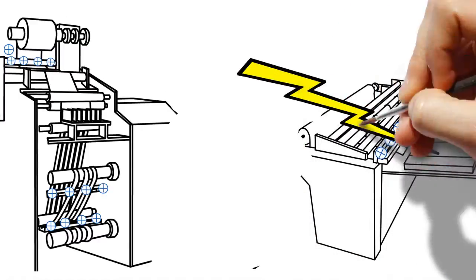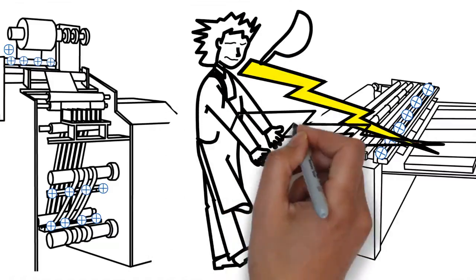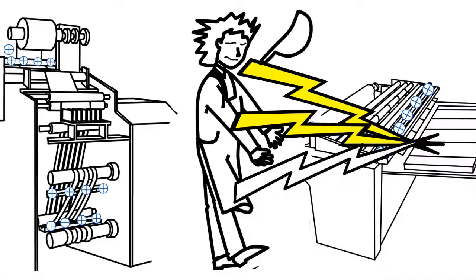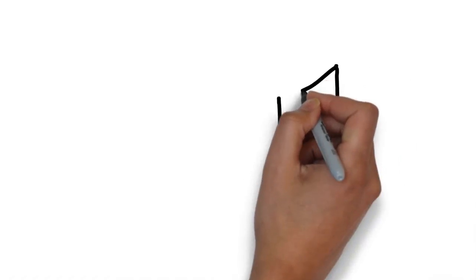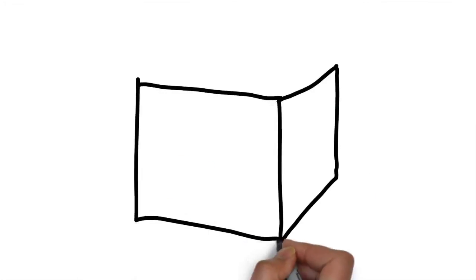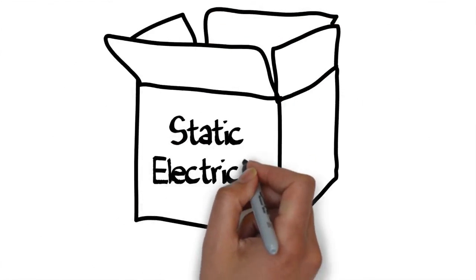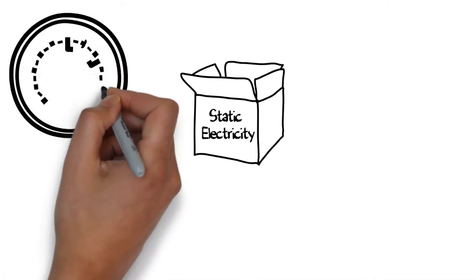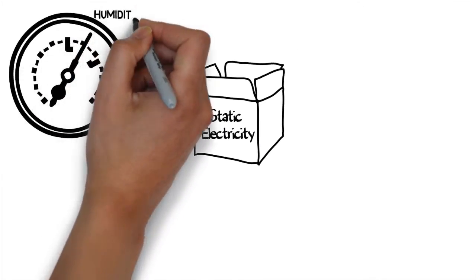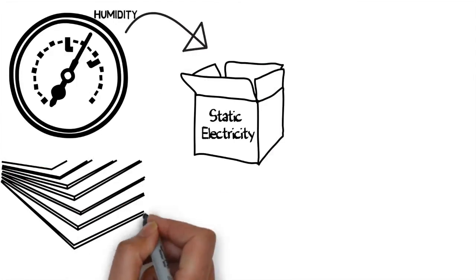This happens in hundreds of applications throughout industry where operators are handling, or close to, statically charged objects. While these are often the cause of static electricity, there are also contributing factors that affect both static generation and the amount of static. Humidity is a big contributor, with static levels significantly higher in drier environments, as is the combination of many charged items, creating what is known as the battery effect.